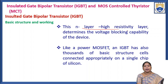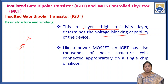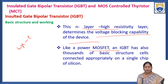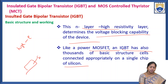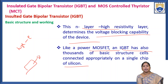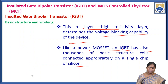The N layer has high resistivity, which determines the voltage blocking capability of the device. Like a power MOSFET, the IGBT also has thousands of basic structure cells connected appropriately on a single silicon chip.